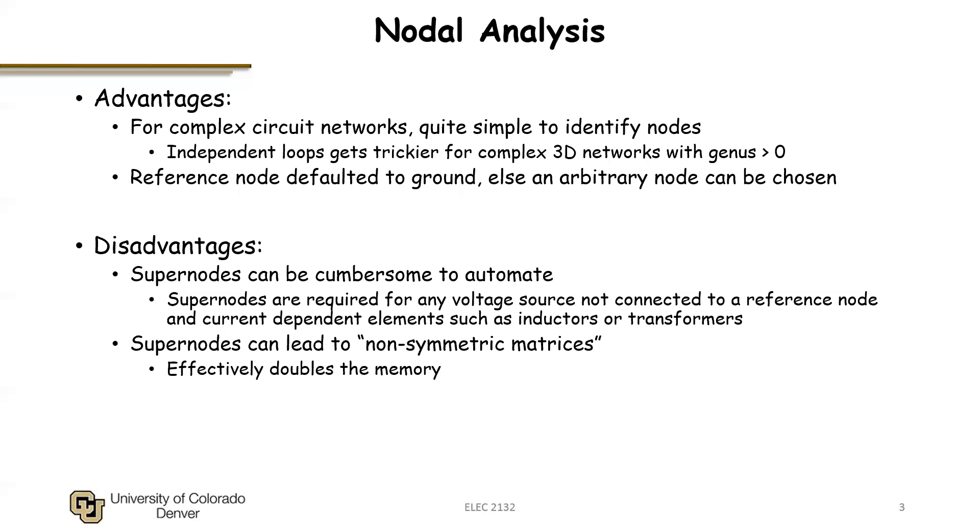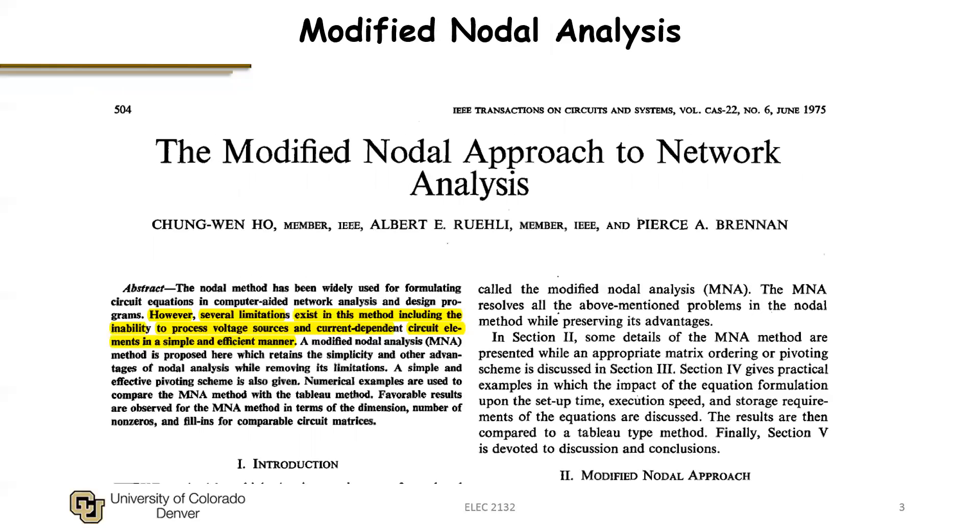The other thing that is not that apparent is if I introduce supernodes, I also introduce asymmetry into the matrix, that is the transpose of the matrix would not be equal to itself. And from a computational standpoint, if it's symmetric, I only need to store half the matrix, which I really need to store things to the right of the diagonal terms, for example.